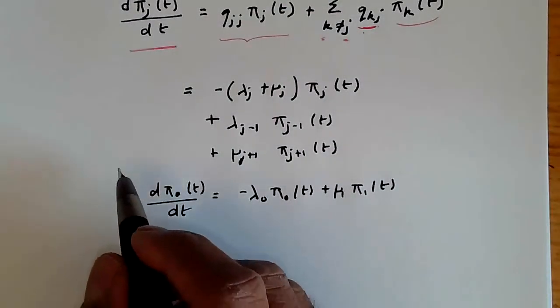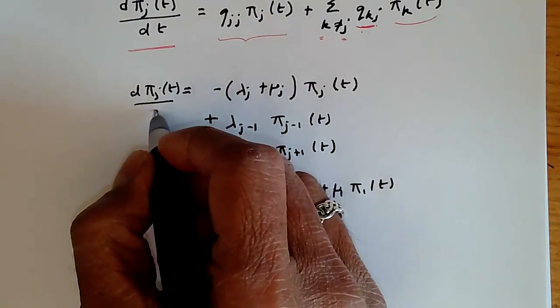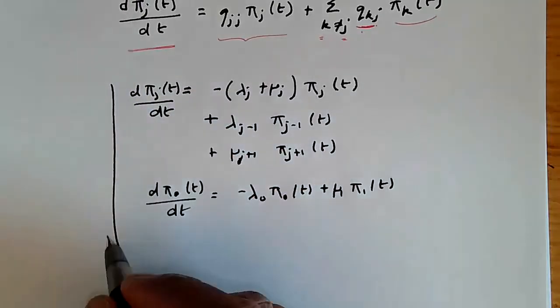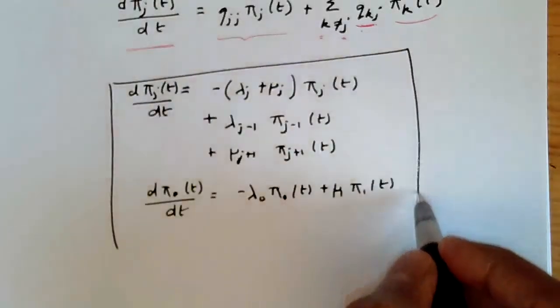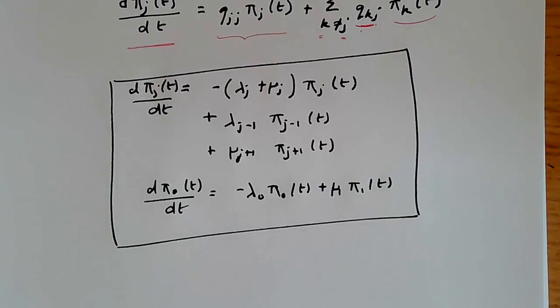So this set of equations gives us everything we need to know about the rate at which we are going to be transitioning out of states in a continuous time Markov chain.